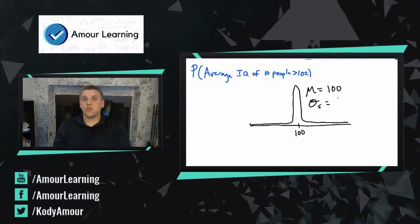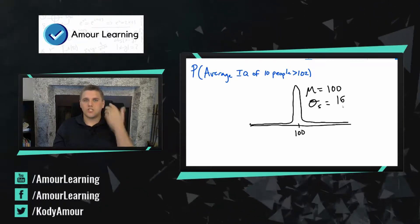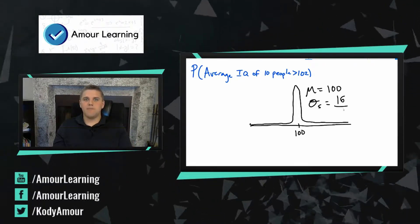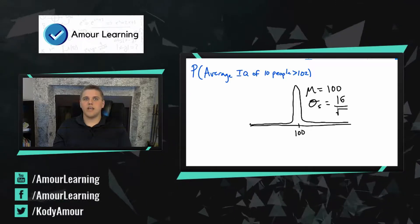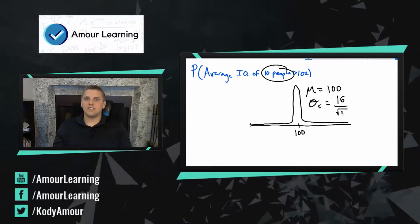Now if you remember from the last lecture, there's a way to calculate this. You take the population standard deviation which was 16 and divide that by the square root of your sample size. Now how many people are you looking at here? In this case it's 10.